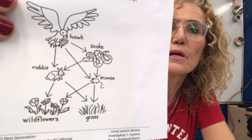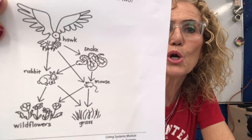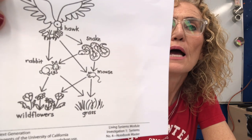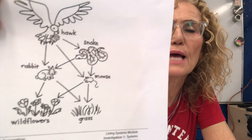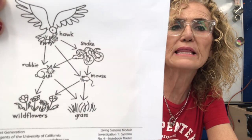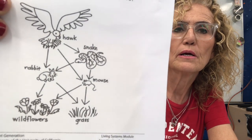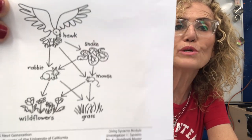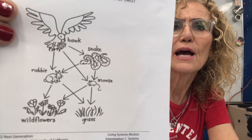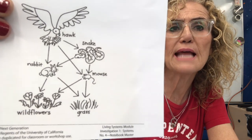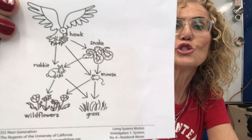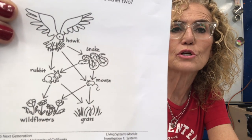There is the bird and the arrow goes from the bird to the snake, from the bird to the rabbit, and from the bird to the mouse. So those arrows mean that the snake, the rabbit, and the mouse all eat the bird — that the energy from the bird goes into those organisms. That's not correct. The hawk eats the snake, the hawk eats the mouse, the hawk eats the rabbit. So all of these arrows need to go in the other direction.